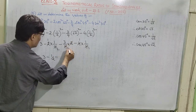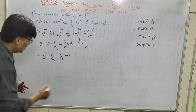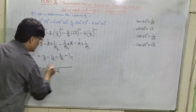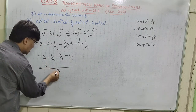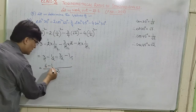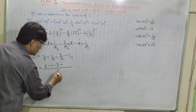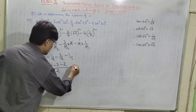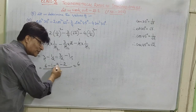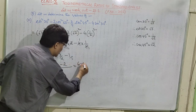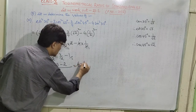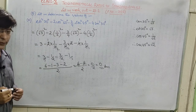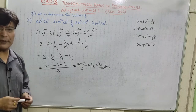Taking LCM as 2: the expression becomes (6 minus 1 minus 3 minus 2) divided by 2. In the numerator: 1 plus 3 plus 2 equals 6, so it is 6 minus 6 divided by 2, which equals 0 divided by 2, which equals 0. So 0 is the value of the given expression.